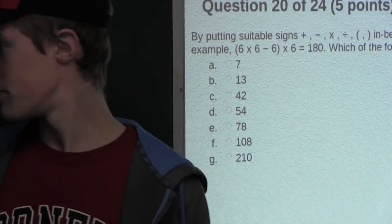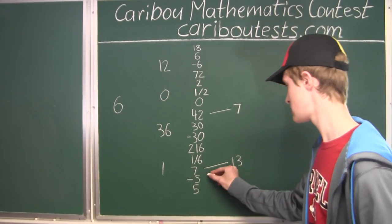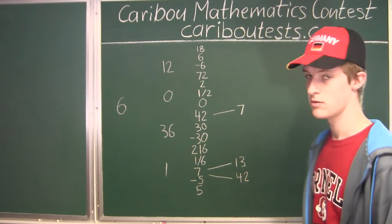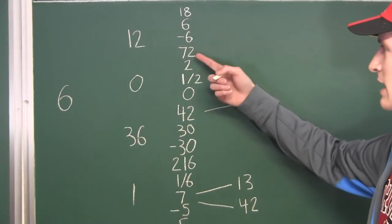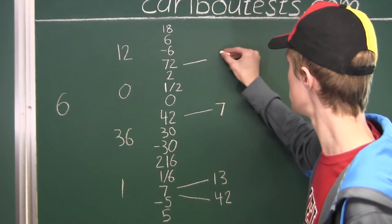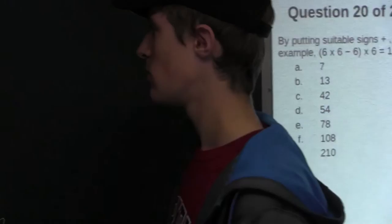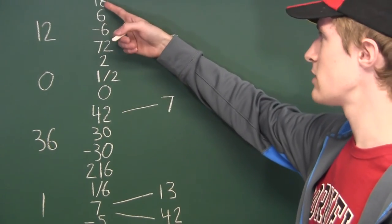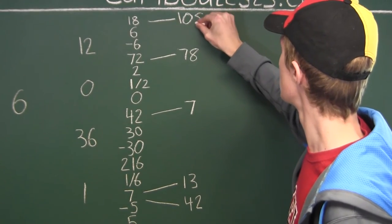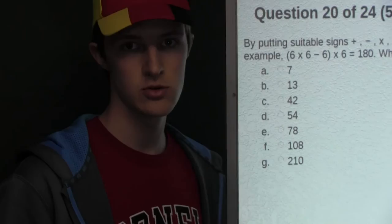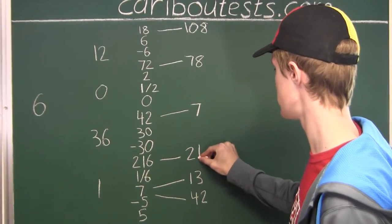Now let's look at 42: we use 7 × 6 = 42. For option 78: we add 6 to 72 from our list to get 78. For 108: 108 ÷ 6 = 18, so we do 6 × 18 = 108. For option G, 210: we have 216 in our list, so 216 − 6 = 210.